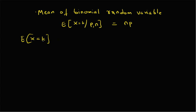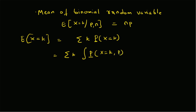Now the mean of the overall random variable, when we integrate out the dependence on p, is defined as the summation of k times the probability P(x = k). This can be rewritten as the summation of k times the marginalized probability P(x = k), which is obtained by marginalizing the joint value P(x = k, p) over p, where p itself is a random variable. We can decompose this as a conditional density P(x = k | p, n) multiplied by the density function of p.